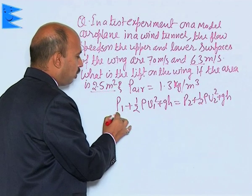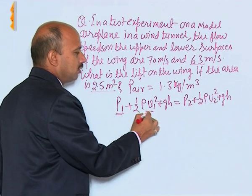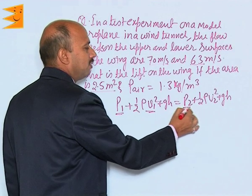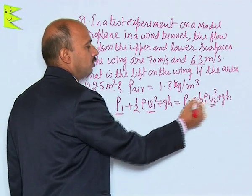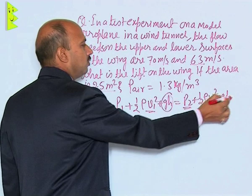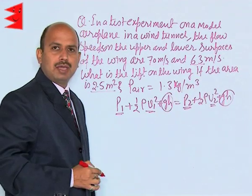On the upper surface of the wing pressure is P1, velocity is V1 and here lower surface of the wing pressure is P2, velocity is V2. H we can ignore because we are not taking height of the wing much higher.